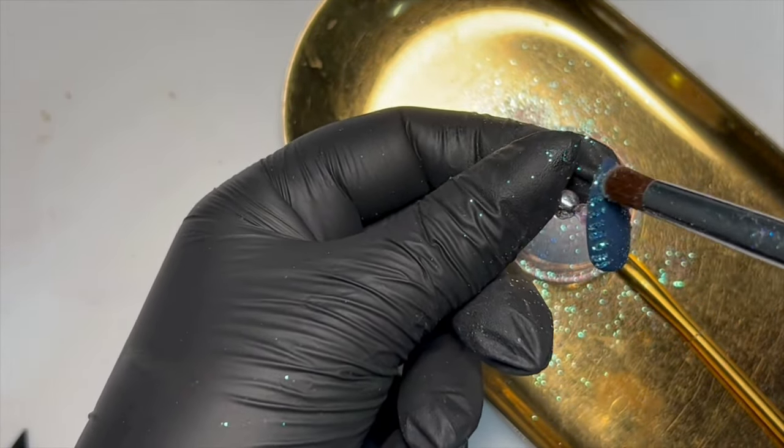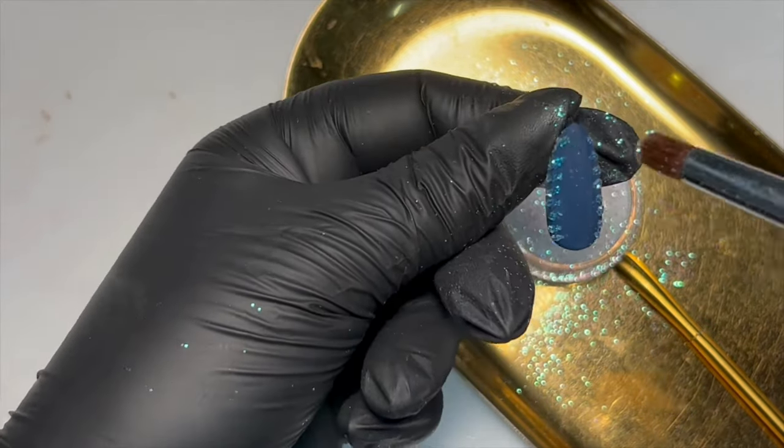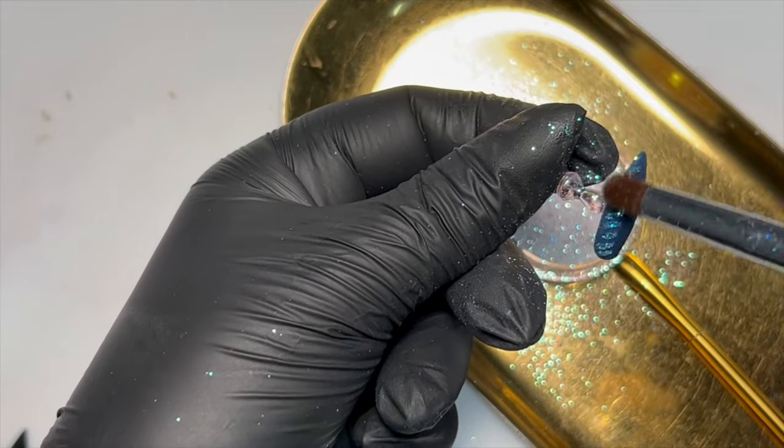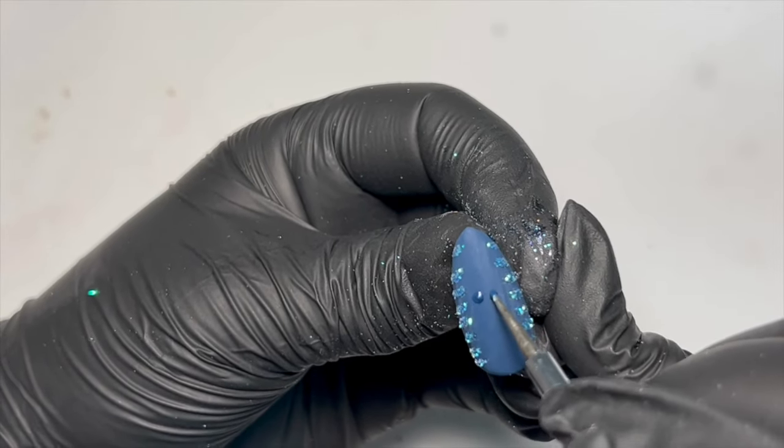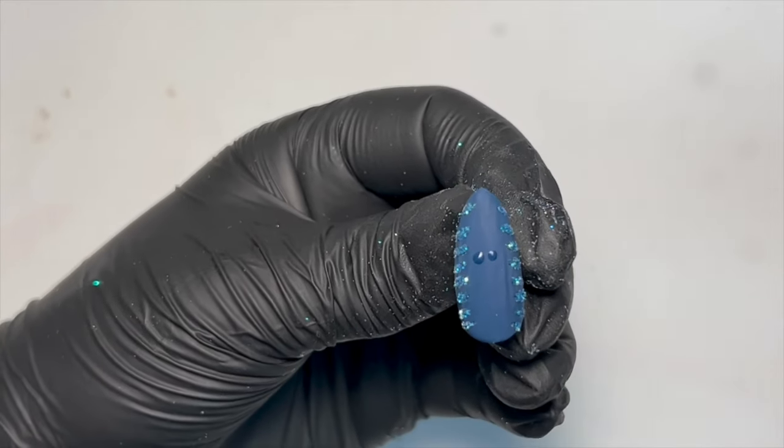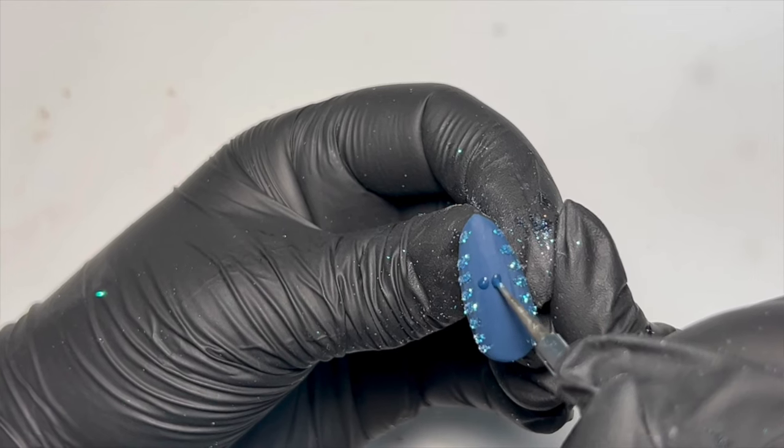And then I'm going in with my fluffy brush and I'm just dusting off everything that's excess on the nail and to add a little bit of extra texture I thought it would look really cute if we did some little hearts down the center of the nail.